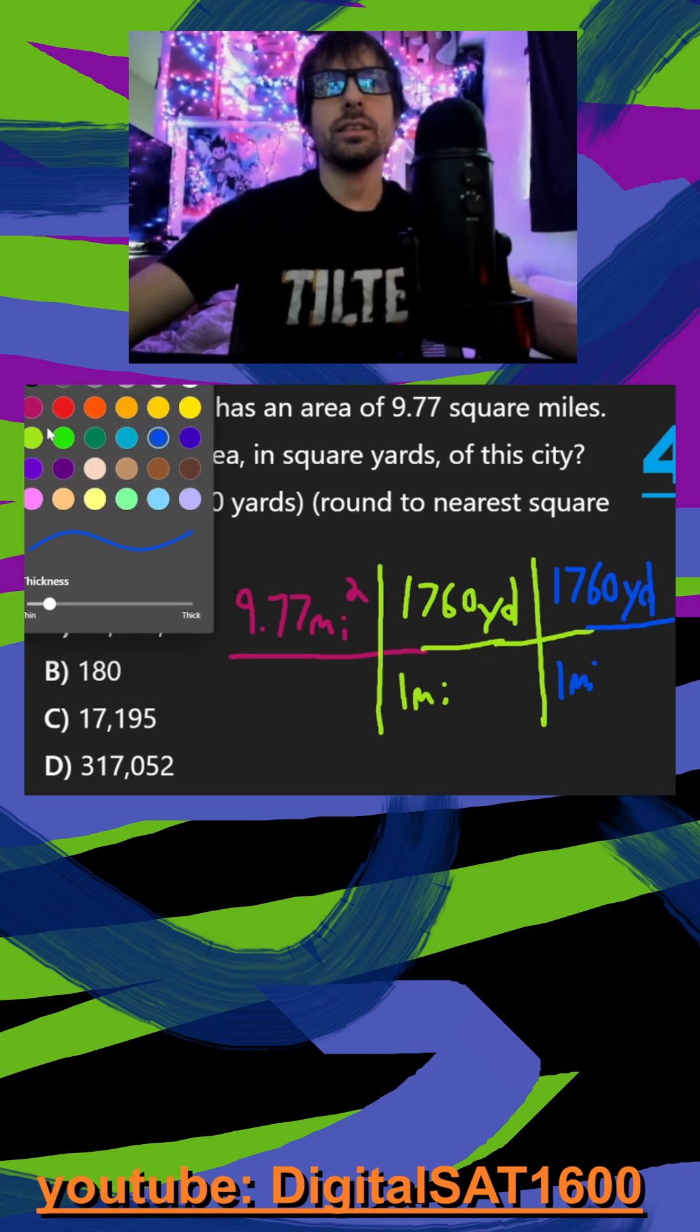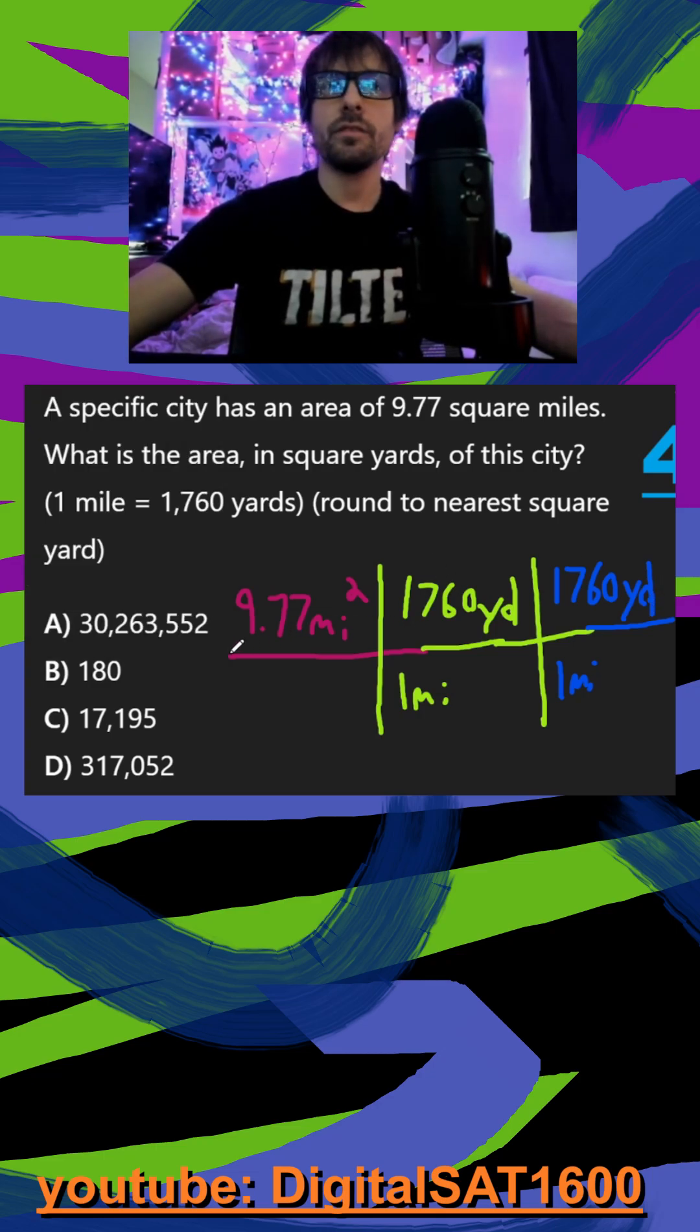So how you kind of treat this organization is it's one big fraction. So imagine this is our divider, and then you're multiplying everything that's in between.